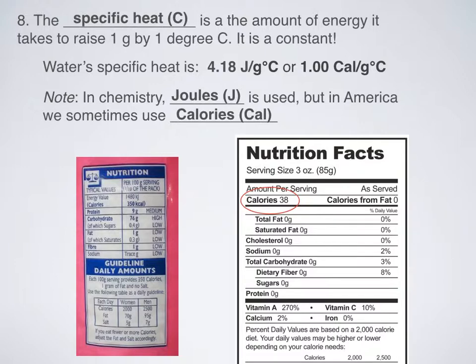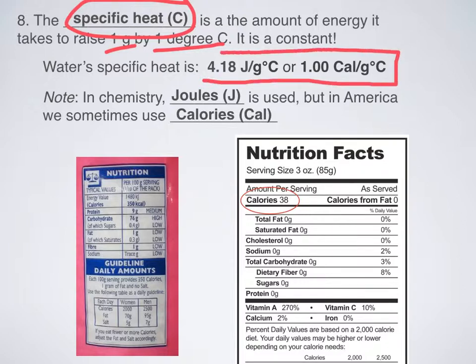So what is the definition of specific heat? Okay, so specific heat or constant C, it's the amount of energy it takes to raise one gram of a substance by one degree Celsius. And so something that you need to commit to memory are these two pieces of information. The constant for water, so specific heat capacity of water, is 4.18 joules per gram degree Celsius, or 1 calorie per gram degree Celsius.